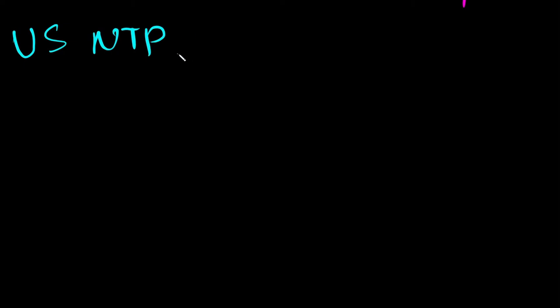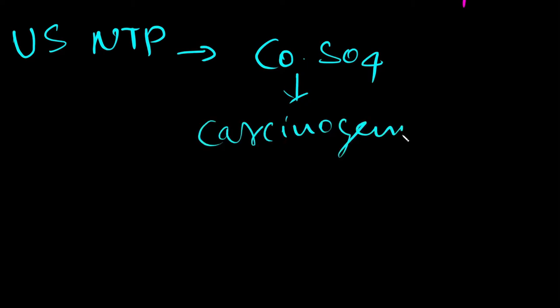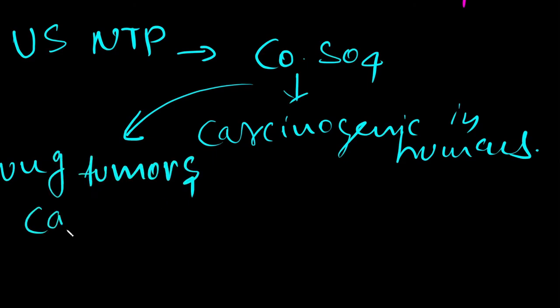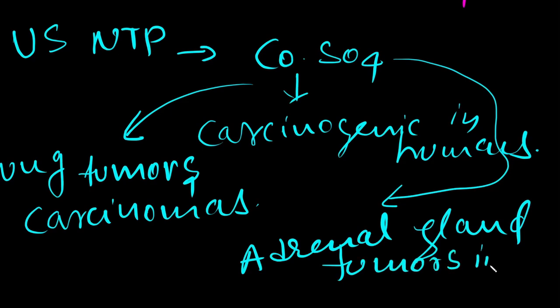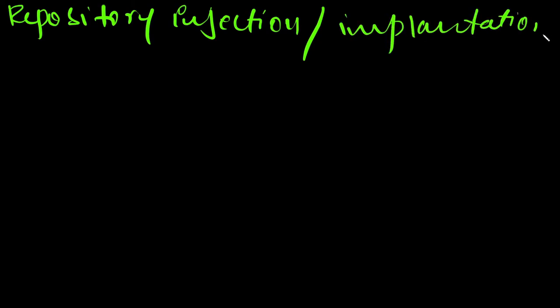Cobalt sulfate is reasonably anticipated to be carcinogenic in humans. In rats and mice, inhalation of cobalt sulfate resulted in lung tumors and carcinomas. Cobalt sulfate was also associated with adrenal gland tumors. In female rats, repository injection or implantation of cobalt compounds resulted in local sarcomas.